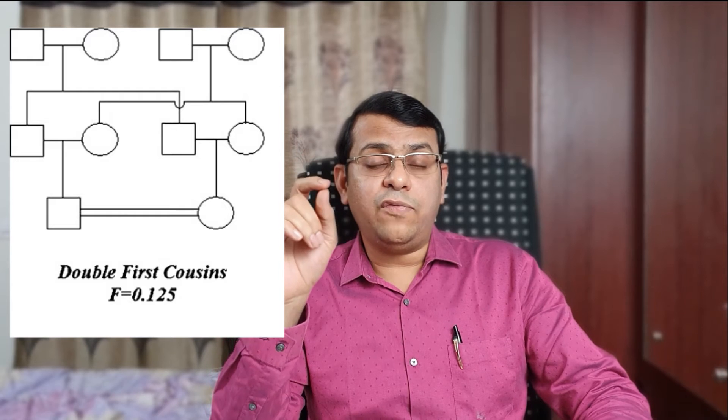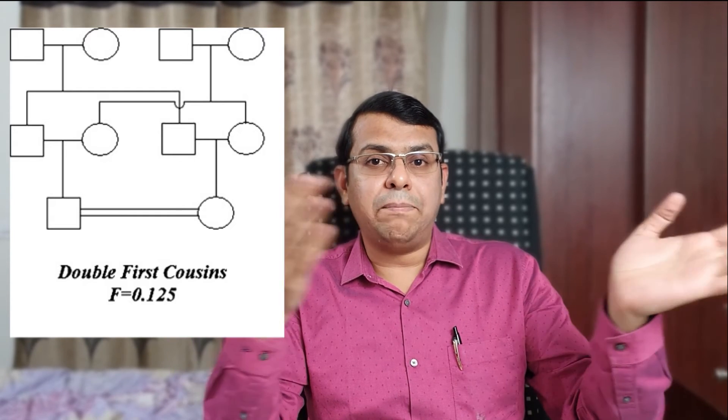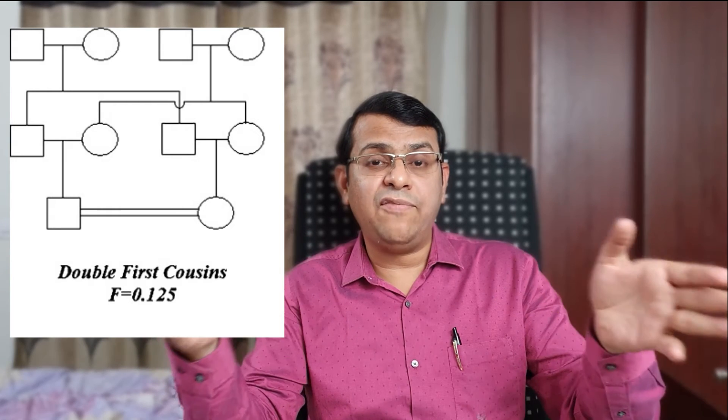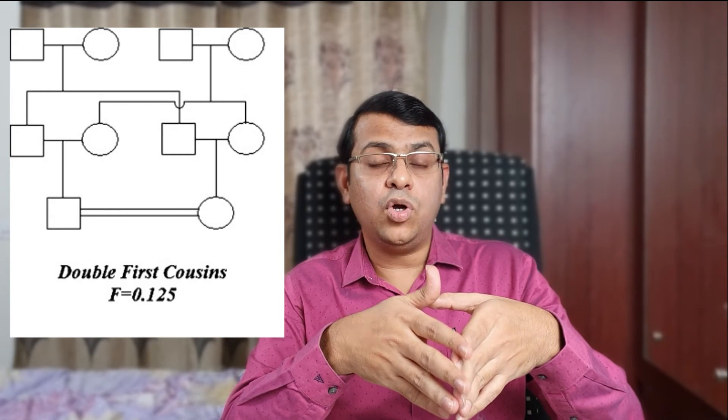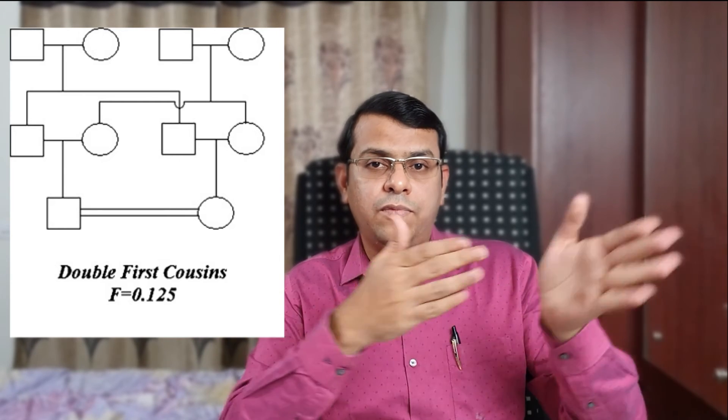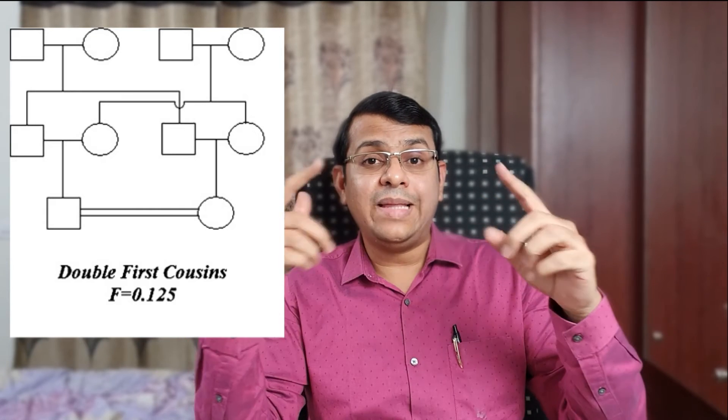The most risk is associated with double first cousins, as shown in the picture above. Double first cousins means siblings marry siblings, and children born to them if they marry among themselves — the risk is more because the level of inbreeding is closer. The so-called father and mother — that is the persons who are getting married — their grandparents, both sets, are the same. This is called double first cousins. This custom is prevalent in the Arab world, and it is risky.